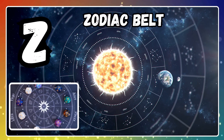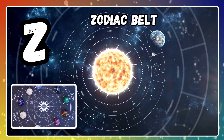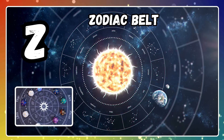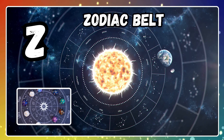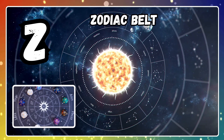Z is for Zodiac Belt. The Zodiac Belt is where planets and stars all align. Thank you.